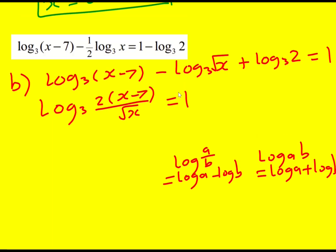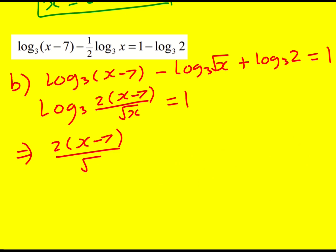I can now undo the logs. So it must be that 2 times x minus 7 over root x is equal to 3. You can either do that just by understanding your logs. Remember it's 3 to the power of 1 is equal to the thing that we're finding the log of. Or you can raise both sides to the power of 3. Next up, multiply 3 by that square root, and I'm going to multiply the brackets out at the same time. So 2x minus 14 is equal to 3 root x.